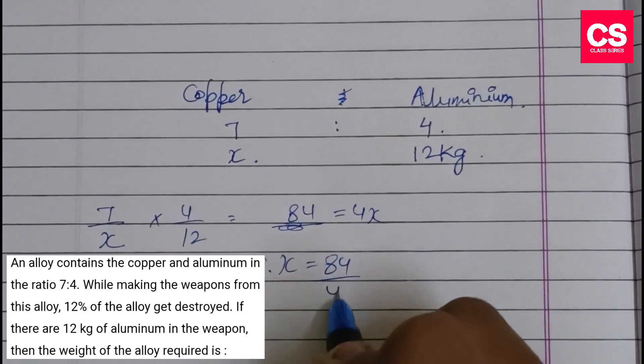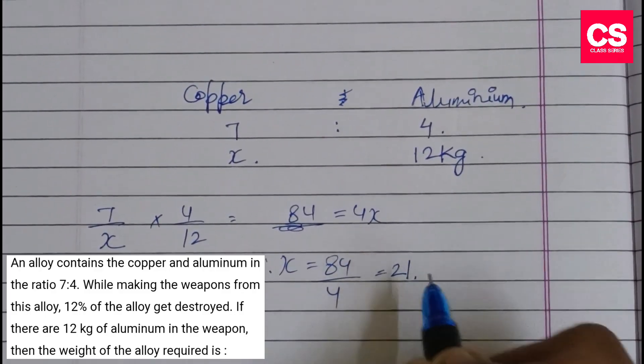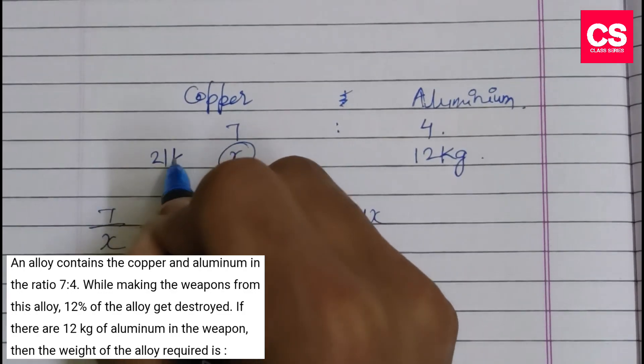Setting up the equation: 4x = 12, so x = 84 divided by 4, which equals 21. Therefore, x = 21 kg.